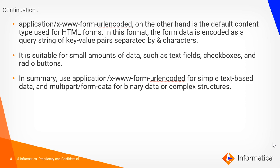Application form URL encoded, on the other hand, is the default content type used for HTML forms. In this format, the form data is encoded as a query string of key-value pairs separated by ampersand characters. It is suitable for small amounts of data such as text fields, checkboxes and radio buttons. So basically, multipart form data is ideal for sending non-ASCII or binary data and is the only content type that allows you to upload files. If you have binary or non-alphanumeric data or a significantly sized payload to transmit, you can use multipart form data as a media type. Otherwise, users can go with application form URL encoded. In summary, we use application form URL encoded for simple text-based data and multipart form data for binary data or complex structures.